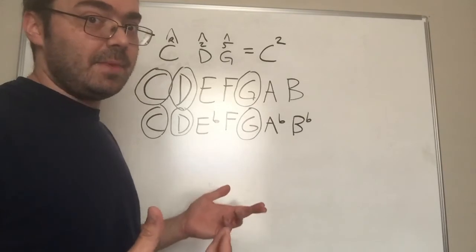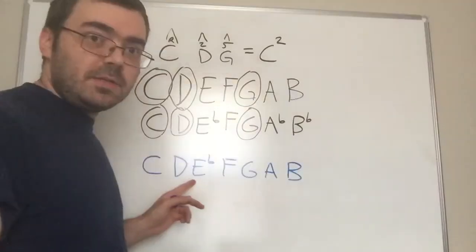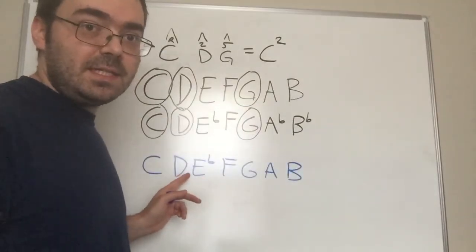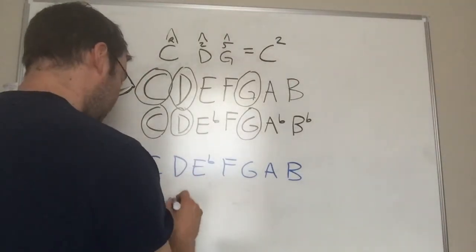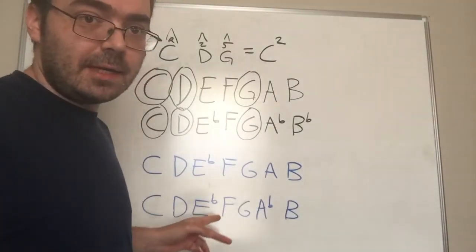Now let's take a look at C melodic minor or C harmonic minor. There's C melodic minor, C, D, E flat, F, G, A, B. And here is C harmonic minor.